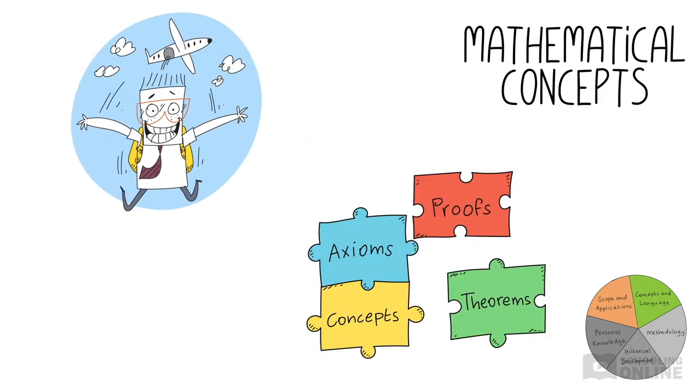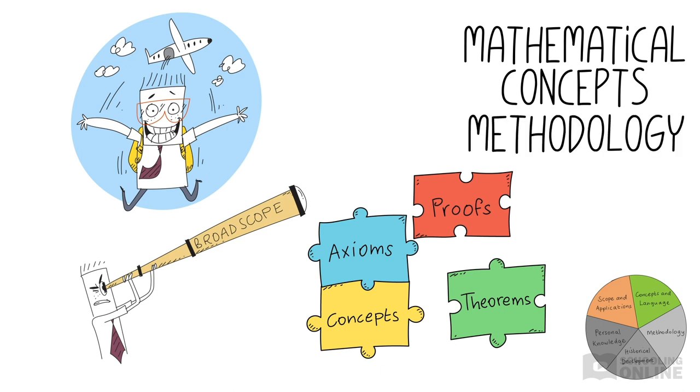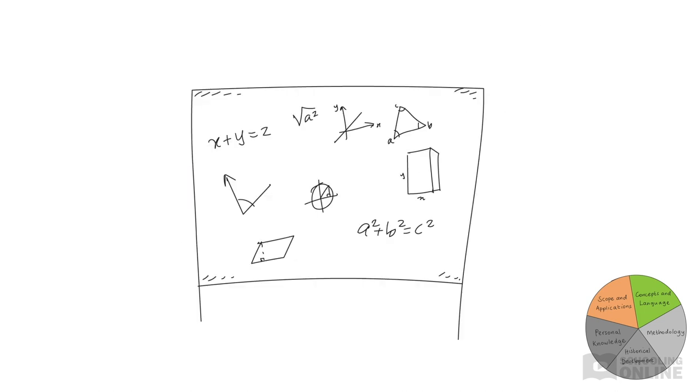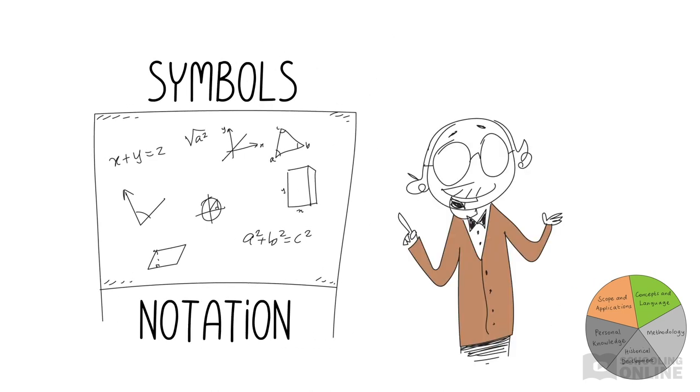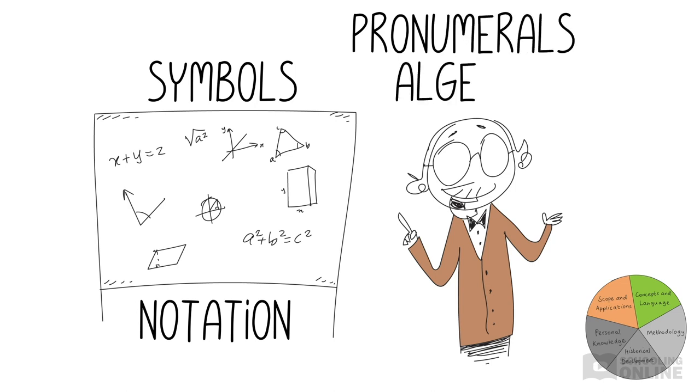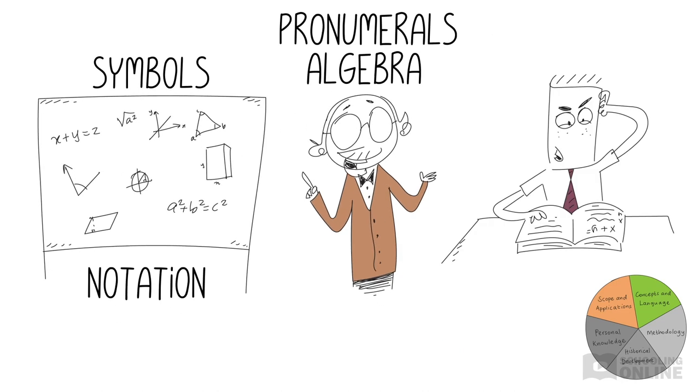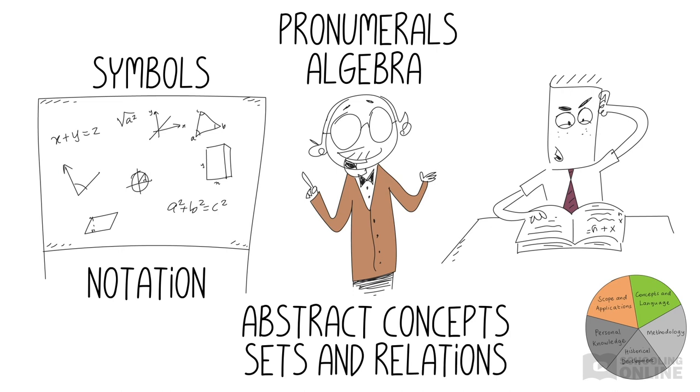Think about how maths could apply to other areas like religious knowledge systems or ethics. You might be surprised by how broad the applications of mathematics really are. Mathematical concepts are extremely diverse due to the broad scope of this area of knowledge. Even so, many concepts rely on fundamental elements such as axioms, theorems, and proofs. We'll discuss these key elements in the next section on methodology. Mathematical language typically refers to the symbols and notation that are used to communicate knowledge in maths. For example, pronumerals like x and y form the language of algebra. These sets of symbols often represent abstract concepts such as sets and relations.